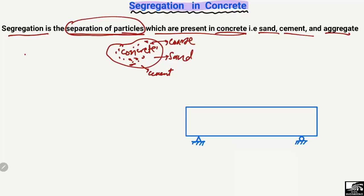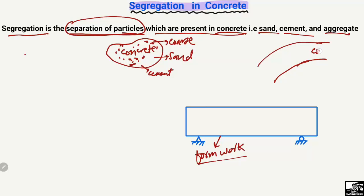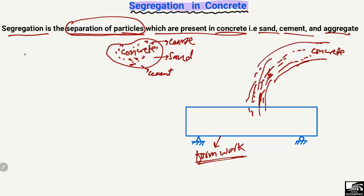To explain this with an example, consider a formwork for a simply supported beam. I provide the formwork for the beam and then put the concrete inside to make a real beam. Before pouring, this is just the formwork or shuttering. The concrete comes from a concrete mixer truck and is poured into this beam.